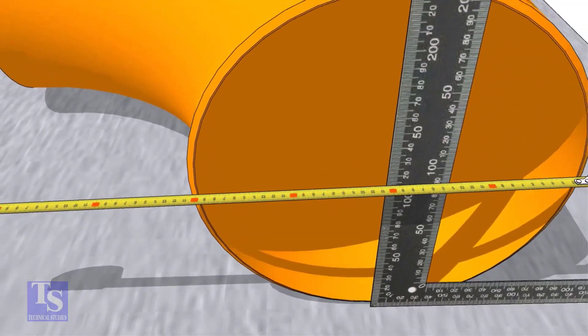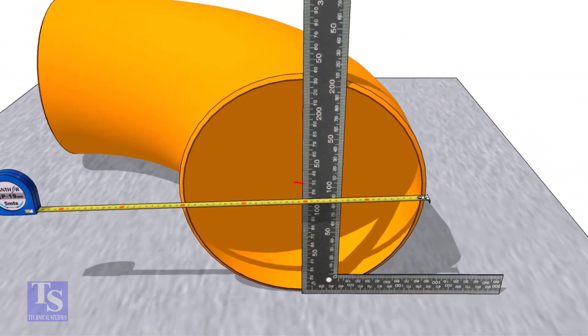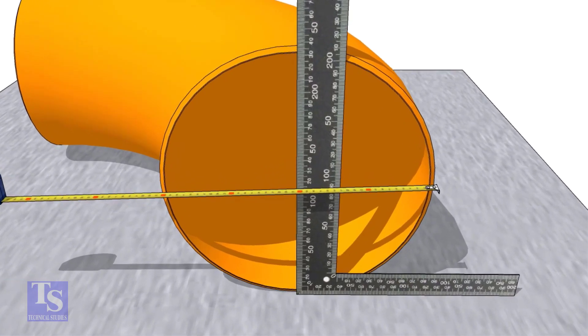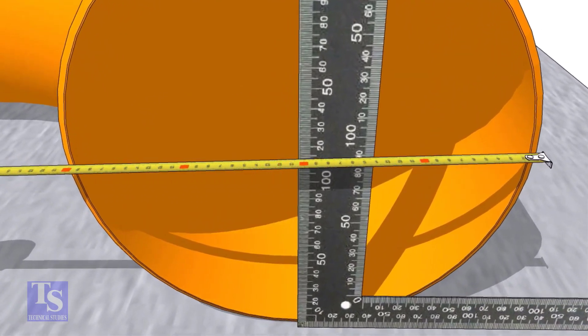Put a right angle at the center of the elbow. Make sure the distance from the edge of the elbow to the face of the right angle is equal.